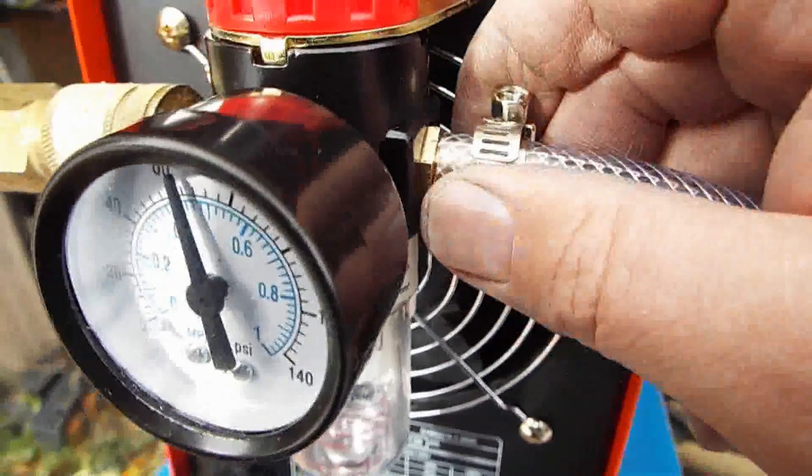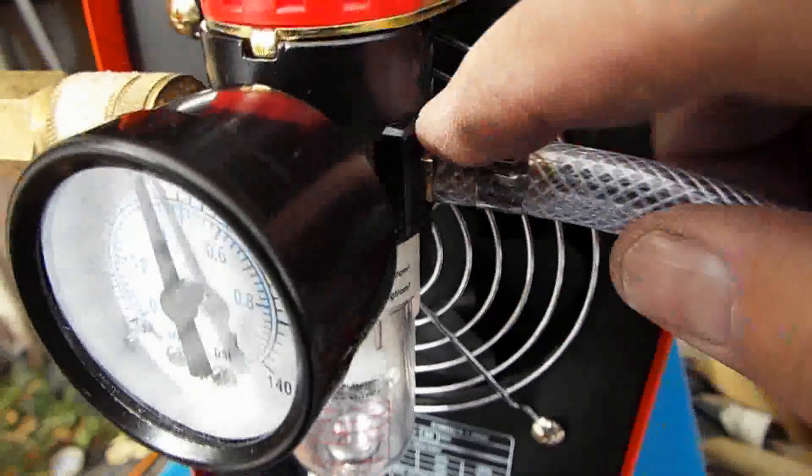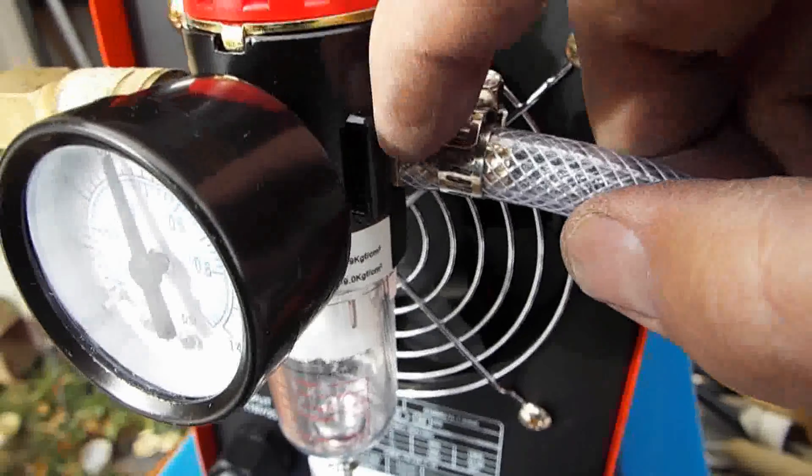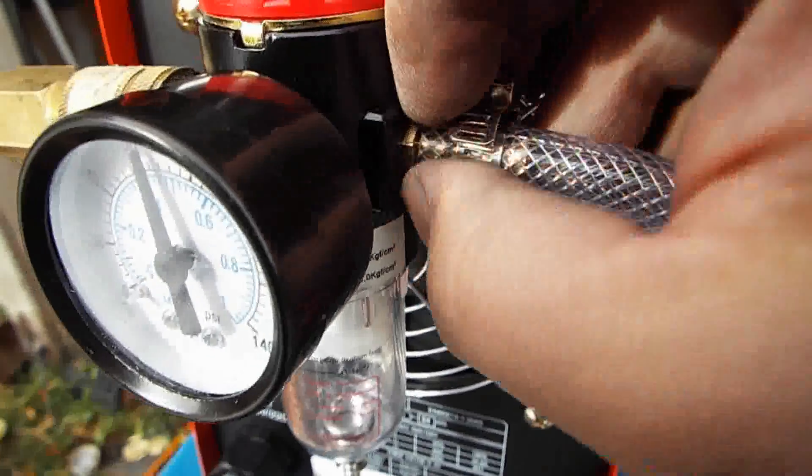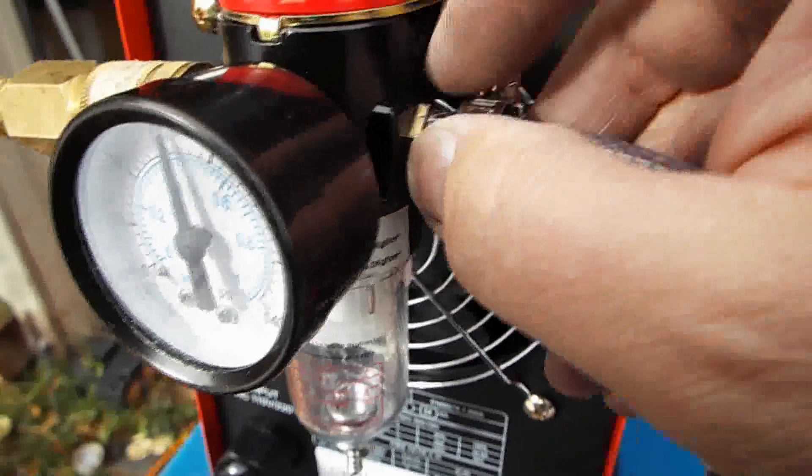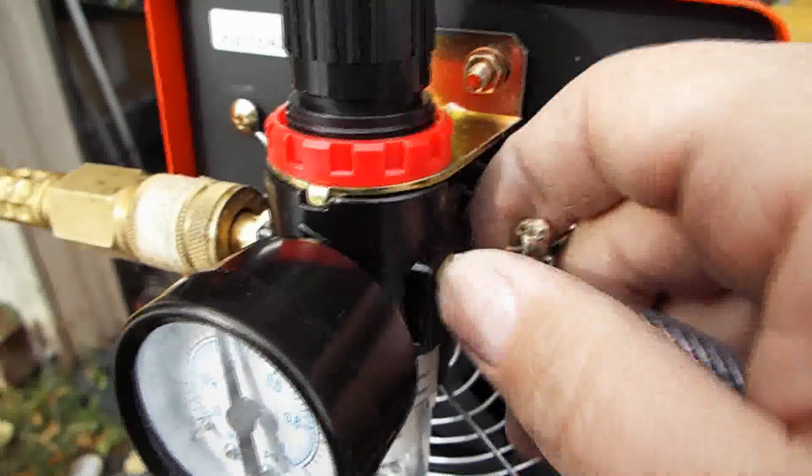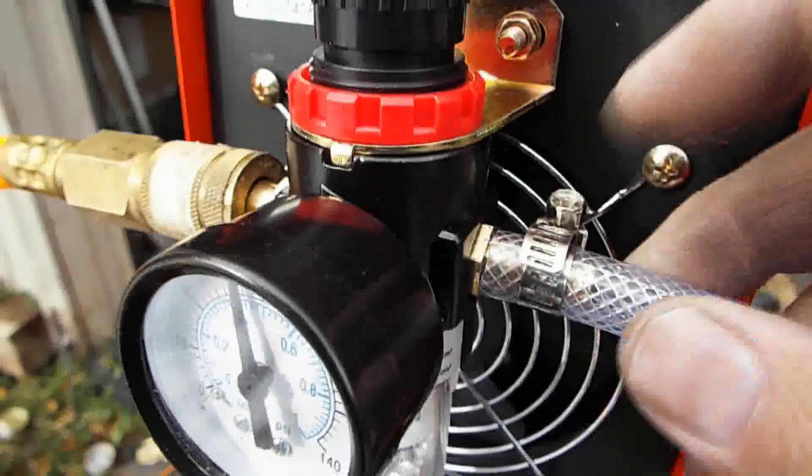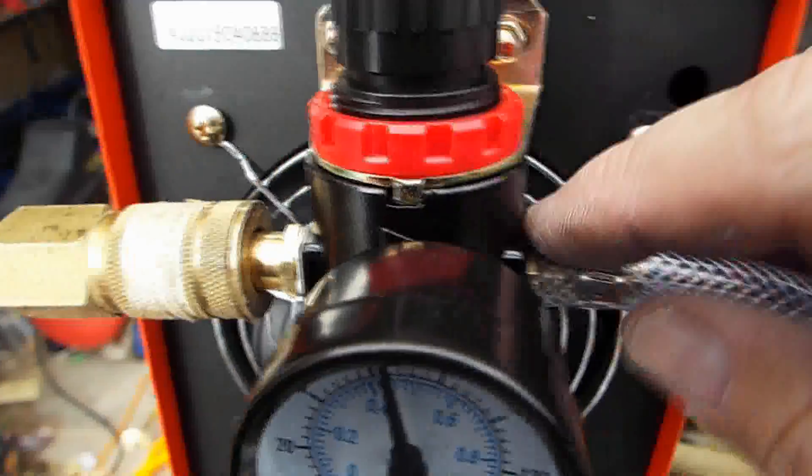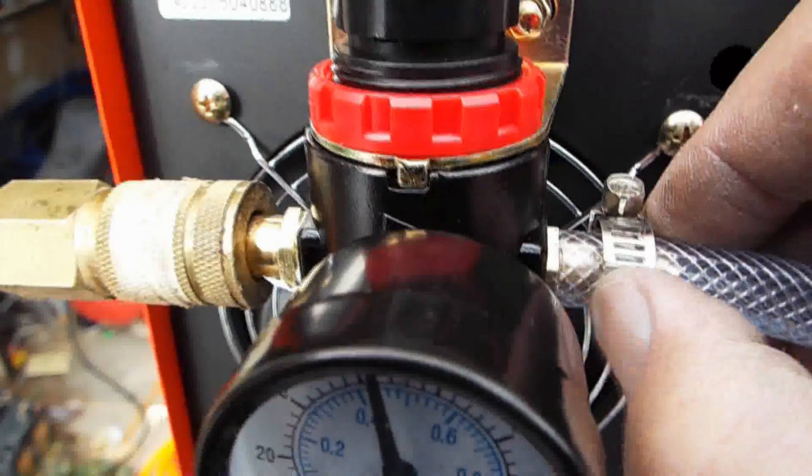And the little fitting they provided with the barbs on it that goes into this was kind of chintzy and it doesn't close up all the way. It doesn't seal even with Teflon tape so you get a little tiny air leak here. I'm going to replace that later. When I get a chance, I've got to get a barb fitting for that. It's a quarter inch NPT fitting.